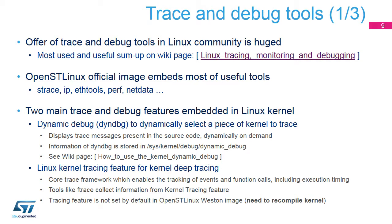Here is some information about trace and debug tools, giving an overview about the solutions available on the STM32MP1 microprocessor, and continuing the example on the UART issue to illustrate. Linux kernel embeds a set of tools for deeper kernel observations. The Linux community also proposes some tools, mainly at user space level, which can get multiple information from the file system and especially from the DebugFS. The Linux Tracing, Monitoring, and Debugging wiki page is a good entry point about trace and debug solutions for Linux kernel ported on STM32MP1.